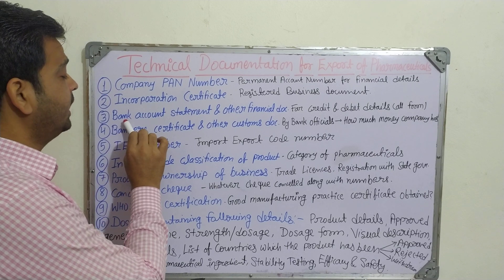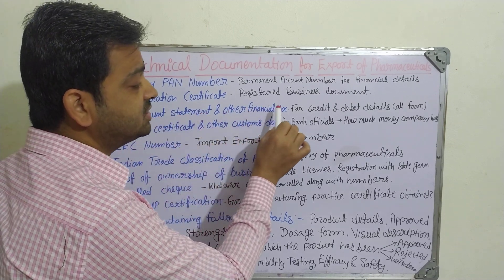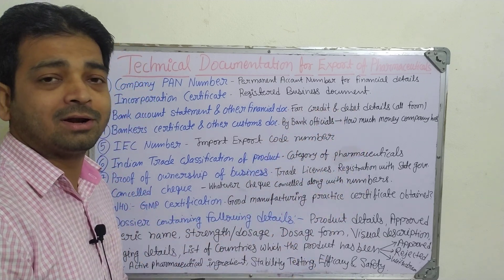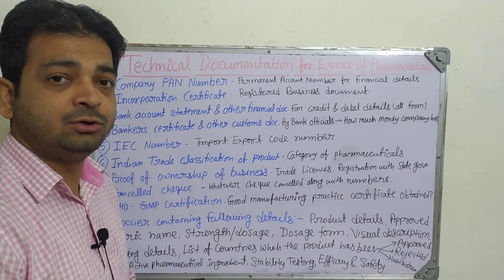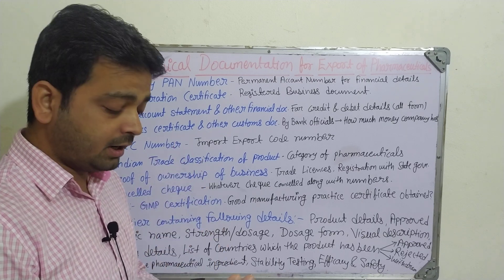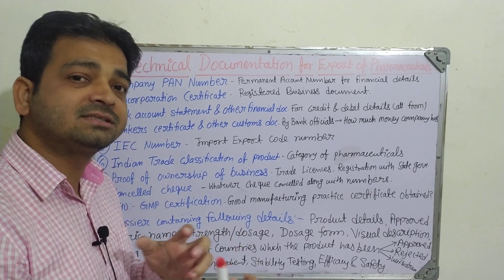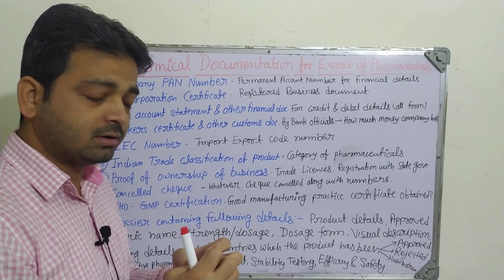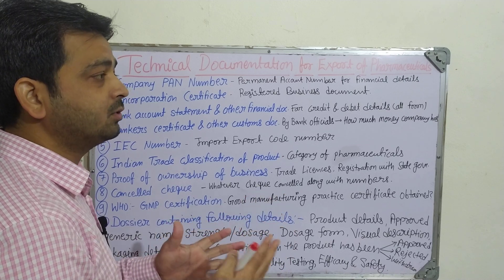The third document is the bank account statement and other financial documents showing credit and debit details. It shows how much amount has been credited into the account opened in the name of the company, how much has been debited, and what kinds of financial transactions are going on with that particular manufacturing company.